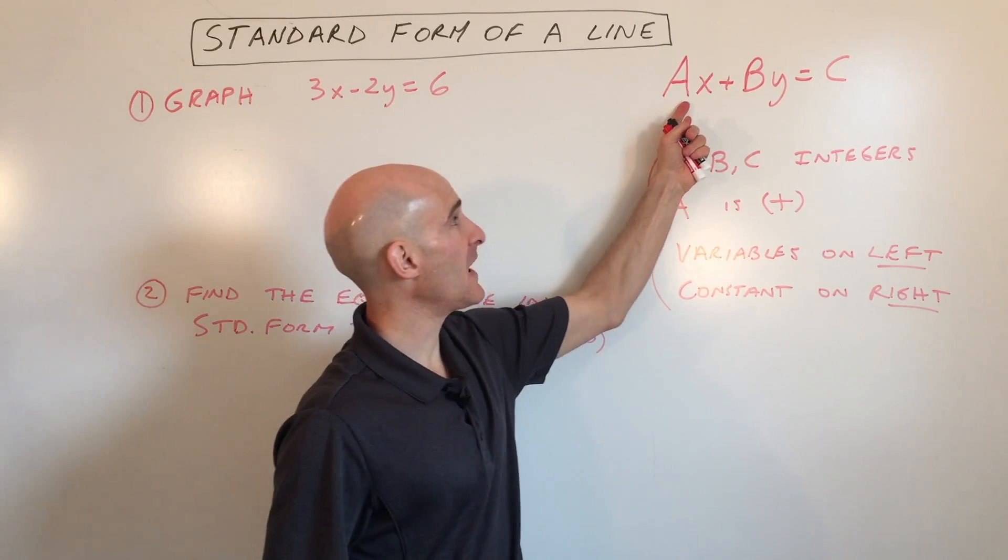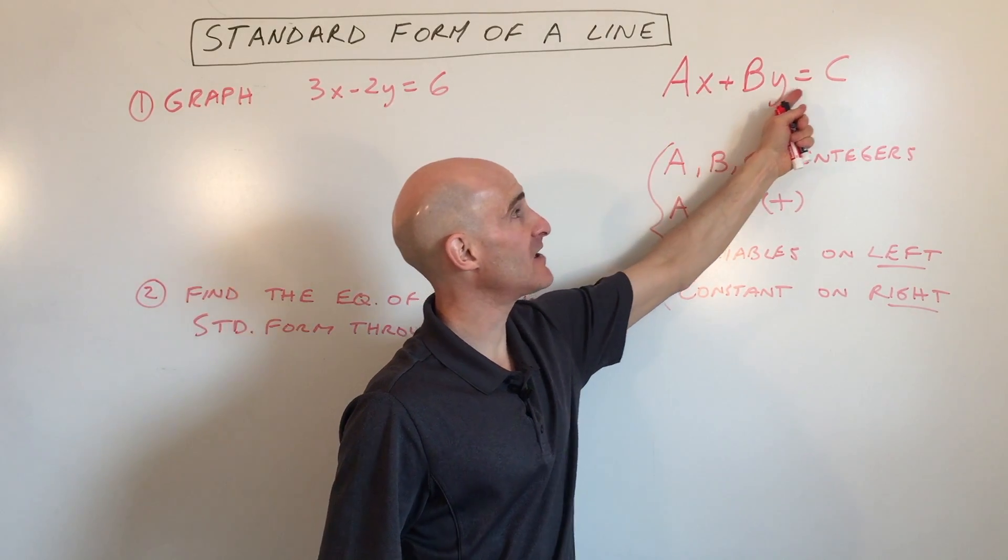of a line. It's in standard form, and it's in this form: Ax plus By equals C.